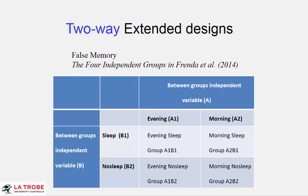Two-way designs. We have two independent variables, and the simplest two-way design has two between-groups independent variables in a two-by-two design, which means each independent variable has only two levels.